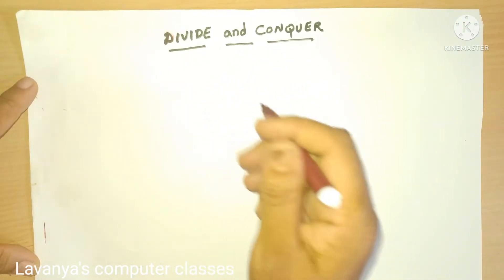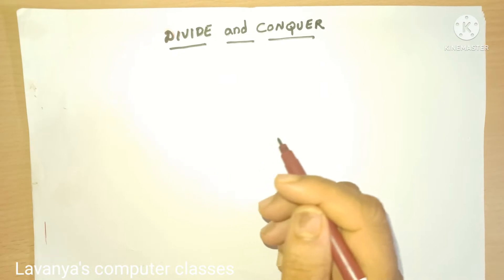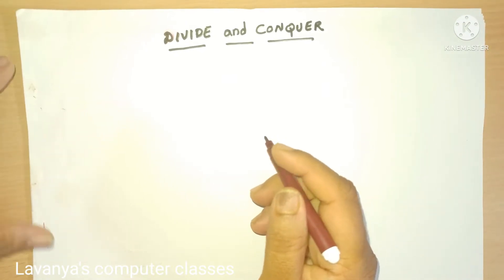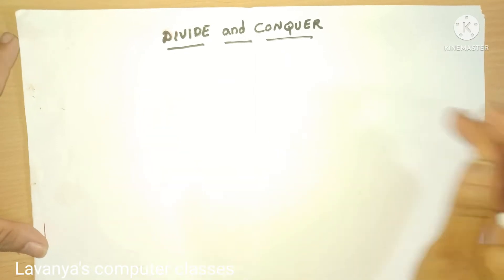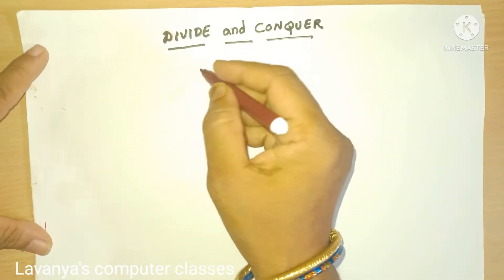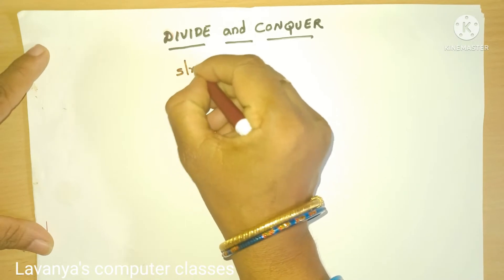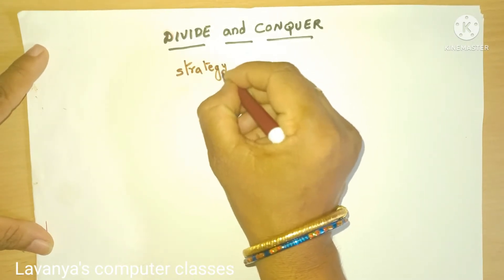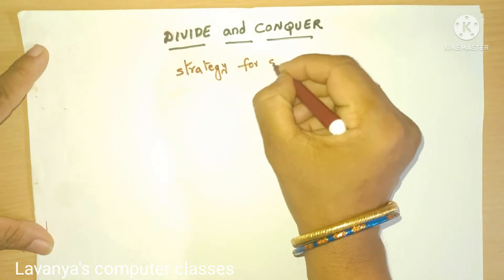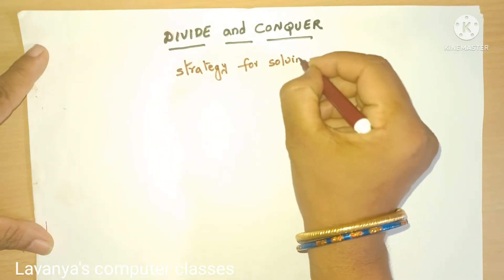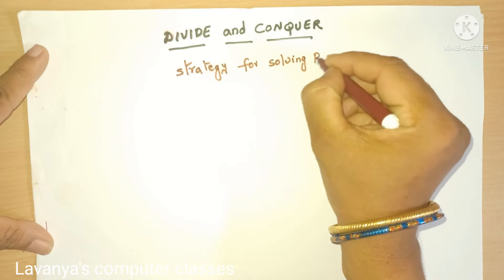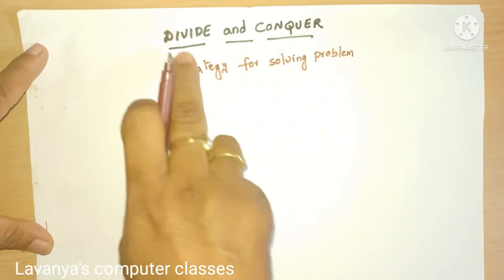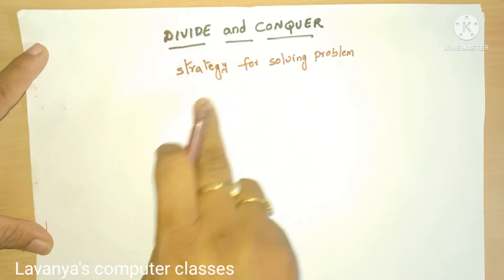For any problem, first we write an algorithm for the solution of that problem. In the divide and conquer method, it is a strategy for solving a problem. We have so many strategies, and divide and conquer is one of those methods.